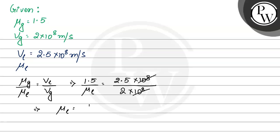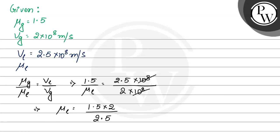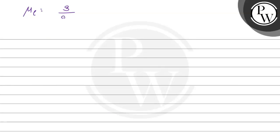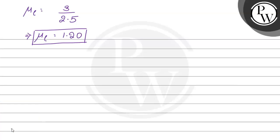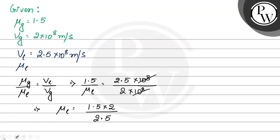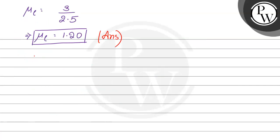So, mu l will be equal to 1.5 into 2 divided by 2.5. That gives us 3 divided by 2.5, which implies the value of mu l is equal to 1.20. So the refractive index of that liquid with respect to air is 1.20. The correct option is option number 3, 1.20. I hope you have understood the solution well. Thank you and best of luck.